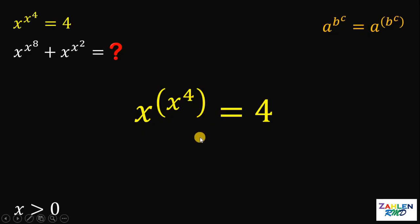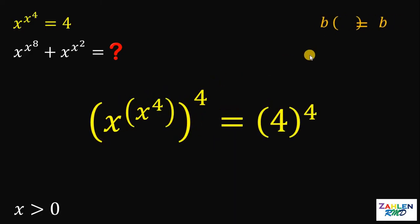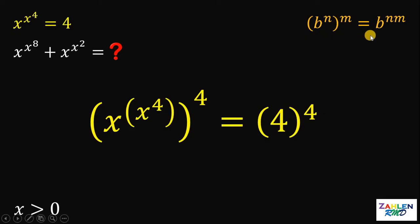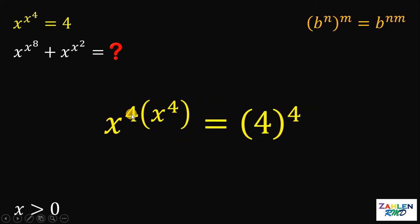What we're going to do here is raise both sides by 4. Let's recall some laws of exponents: if we have b raised to n, raised to the power of m, this is equivalent to b raised to n times m. Therefore, the left-hand side of our equation can be written as x raised to 4 times x raised to the fourth power.